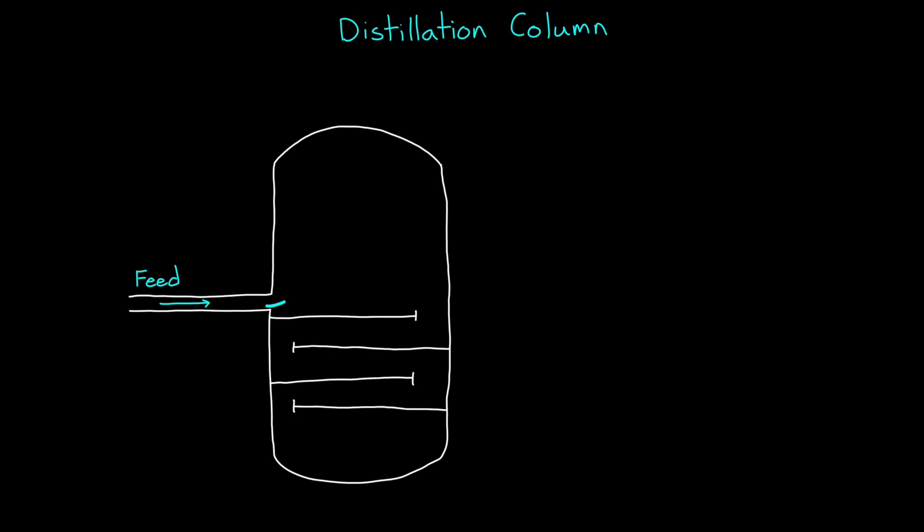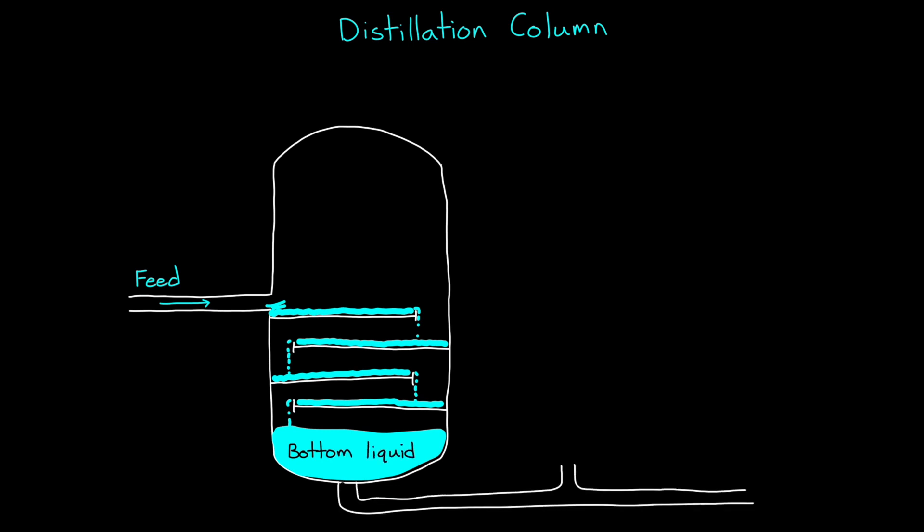For our system, we're going to look at controlling a distillation column. A distillation column distills liquid, or separates it into its component parts. And very basically, it works like this. The unprocessed liquid is fed into the middle of the column. The liquid cascades down a number of feed trays and collects at the bottom. This bottom liquid is pulled out, and some portion is sent away. This is the bottom product, and eventually we want this bottom product to have a low percentage of the component liquid that we're trying to remove.